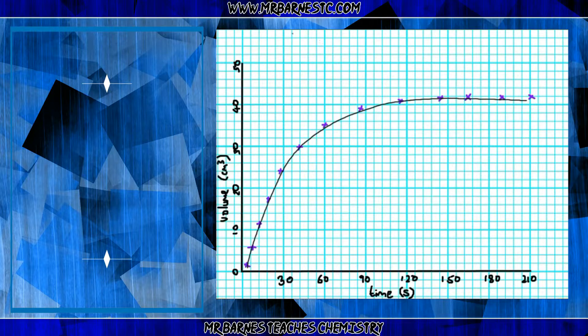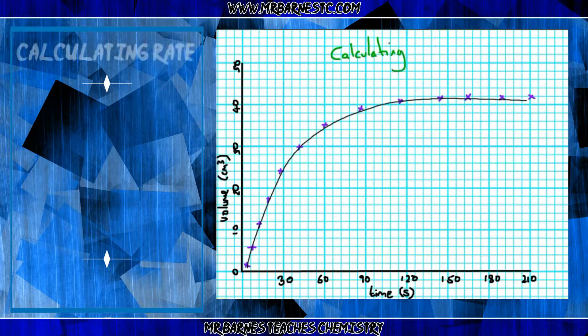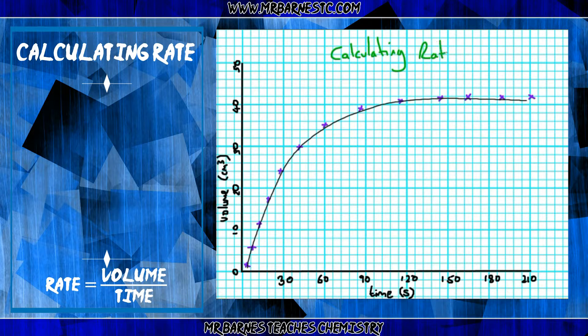Now, there is one final thing, which is the trickiest thing that you guys are going to have to come across in terms of these graphs, which is calculating the rate. As you can see here, the calculation you need to work out the rate is to take the amount of reactant used, or the amount of product formed, and divide it by the time it takes.